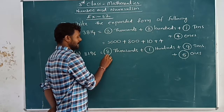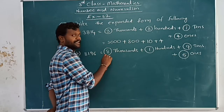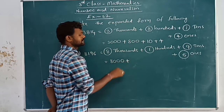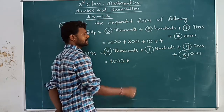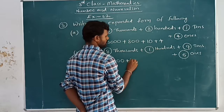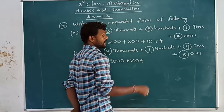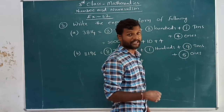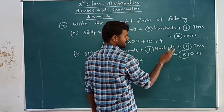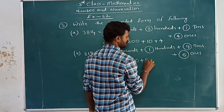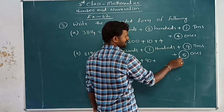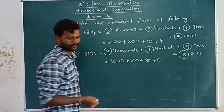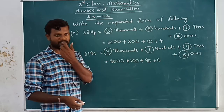Now write down: eight thousands — eight thousands means nothing but eight thousand — plus how many hundreds? One hundred, so only one hundred. Plus how many tens? Nine tens are there. Nine tens are ninety, so ninety. Plus how many ones? Six ones are there, six ones are six. This is the expanded form of the given number.